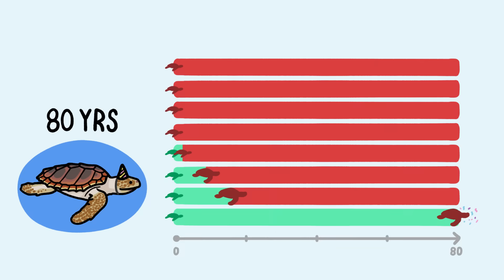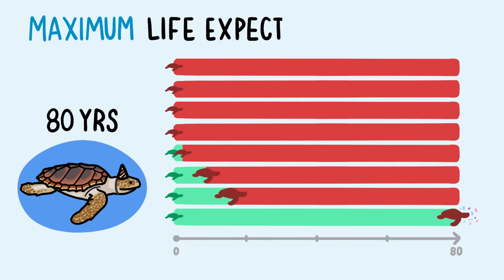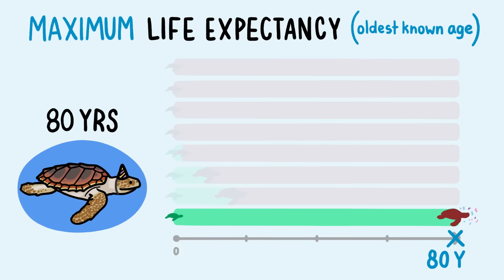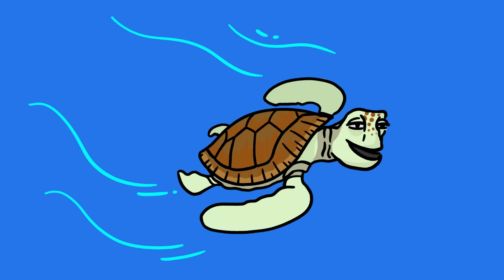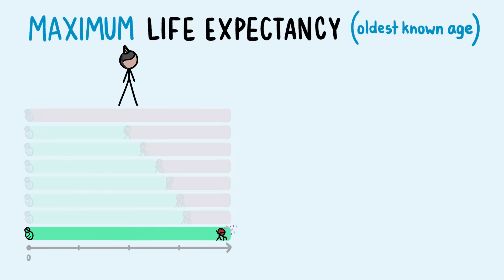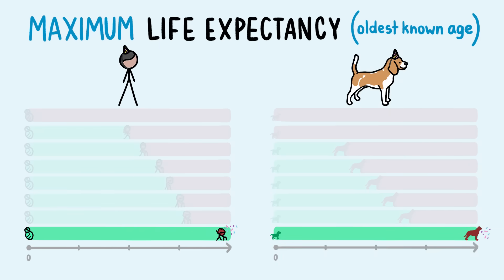For sea turtles, life expectancy usually means maximum life expectancy — how long the oldest individuals live. That's probably because when we talk about less familiar species, we're mostly curious about how long they can live. But if we did that for humans and dogs, we'd get 122 and 29.